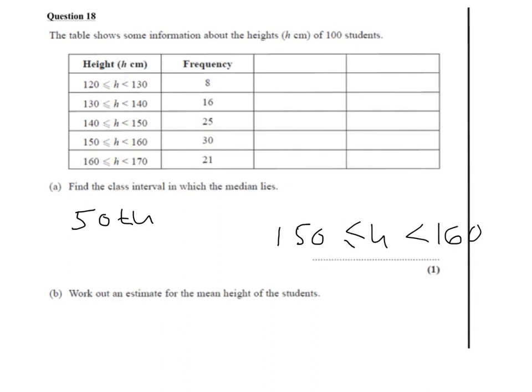You might want to write the cumulative frequencies in so you can see that more clearly. 8 in the first interval, 24 up to the second, 49 up to 150. And there your 50th is certainly going to therefore be in the 150 to 160.